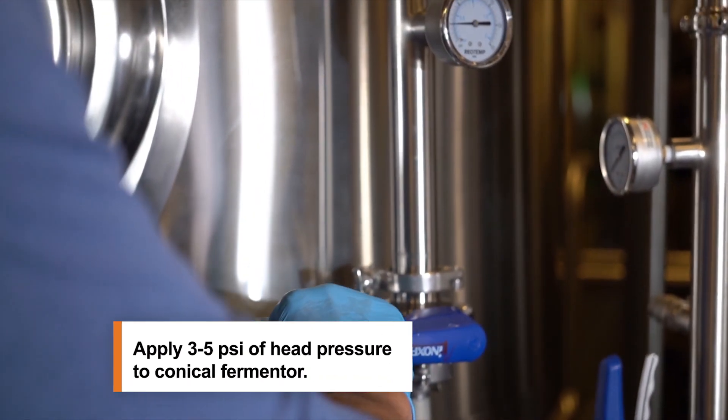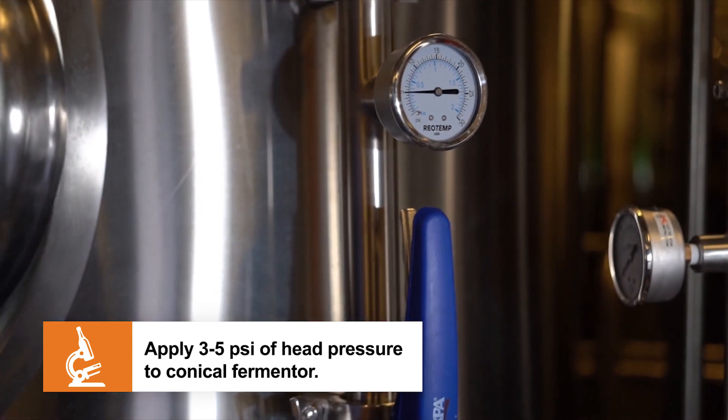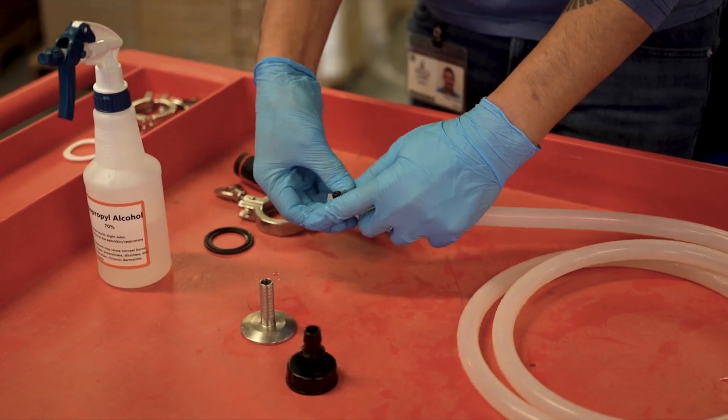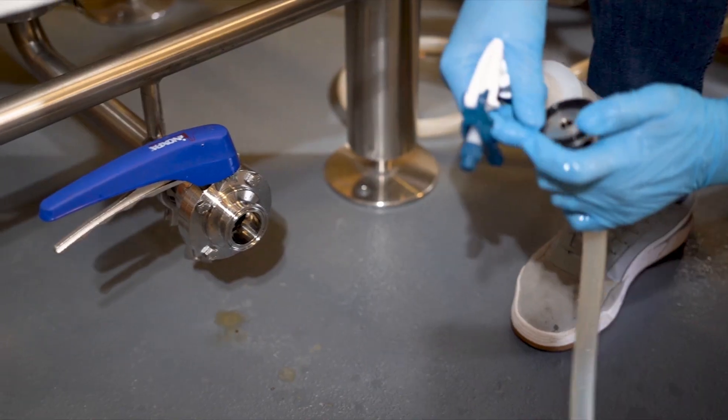When harvesting your slurry, apply positive pressure to your fermentation vessel. Thoroughly sanitize and connect all components and attach to the fermenter.